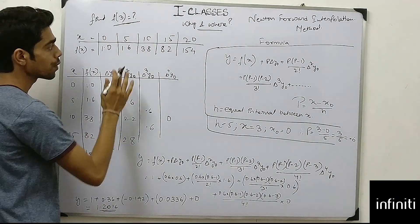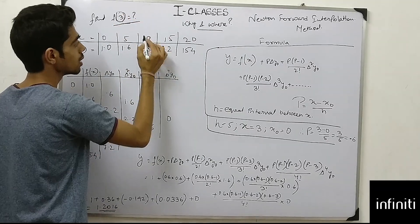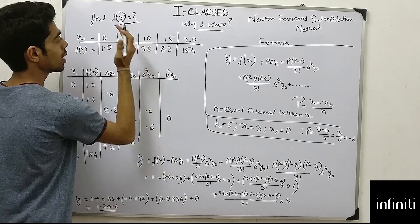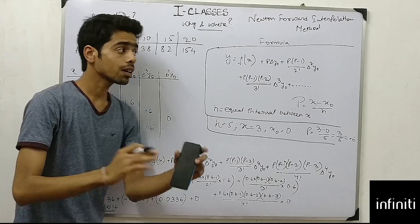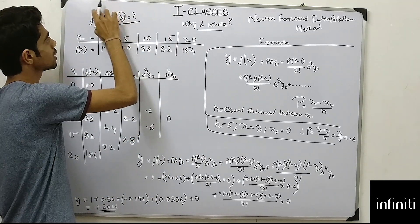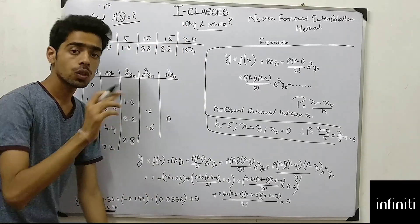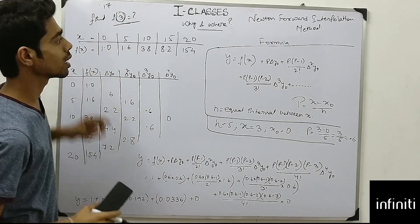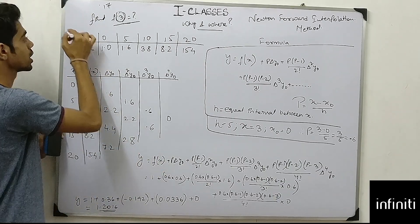Why will I use Newton's Forward interpolation method here? I have to find f(3). Where is 3? It is just before the mid value — mid is 10, so 3 is just before the mid. If I want to find 17, which is just after the mid value, I would use Newton's Backward interpolation method instead.